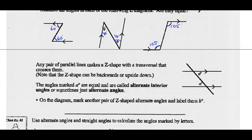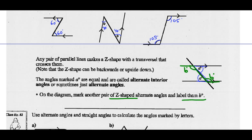The Z shape can be backwards or upside down. The angles marked A are equal and are called alternate interior angles, or sometimes just alternate angles. You can see this Z pattern — those angles are equal. There's another Z pattern here, so these two angles would also be alternate interior angles and would also be equal. We could call those B degrees.